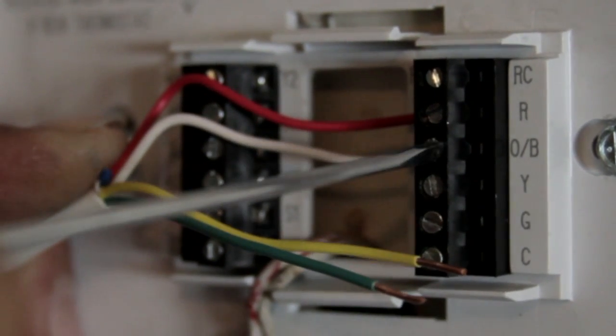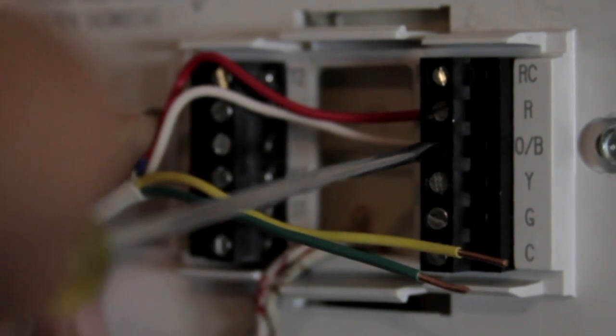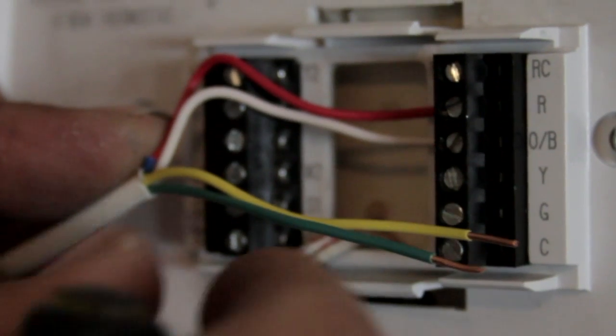One of the things that you want to make sure of when you're actually wiring in a thermostat is to make sure you turn the switch off on the side of the furnace, or you can actually short the control board out or the transformer. W represents heating on this type of thermostat.